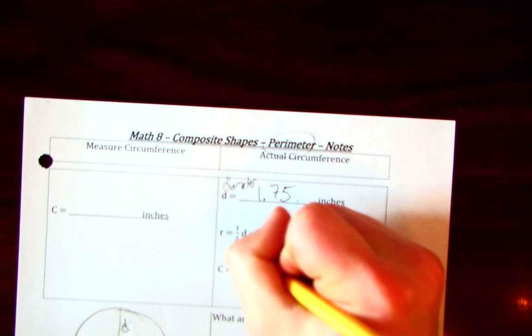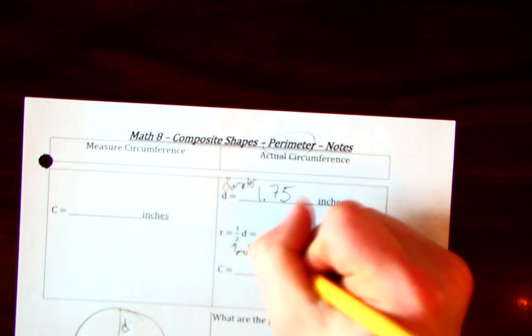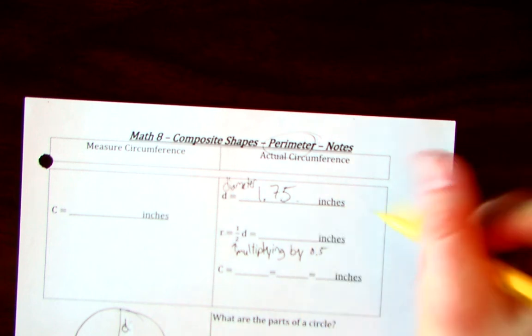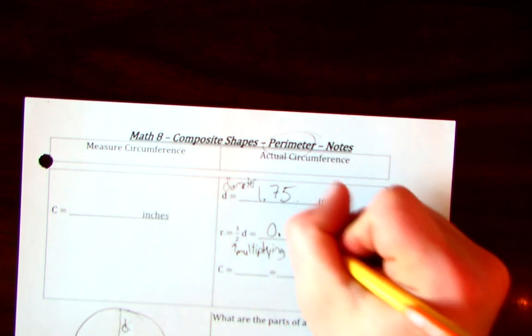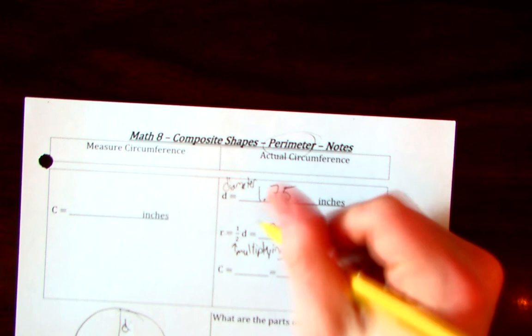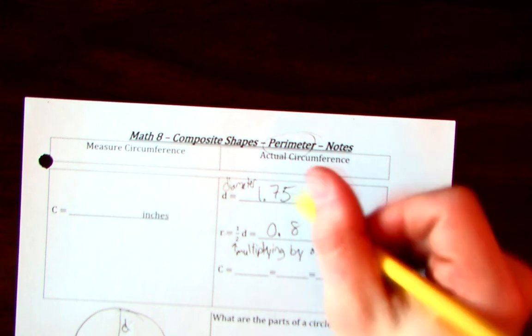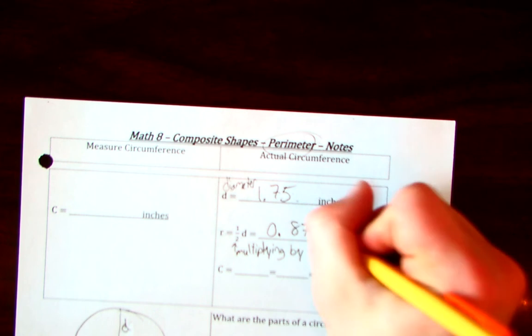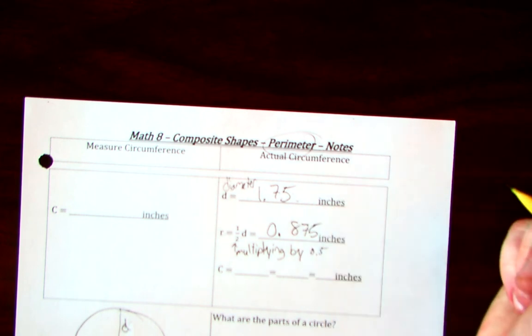This is the same as multiplying by 0.5. And so, half of that would be, half of 1.75 is going to be 0.875. There we go. Now, let's see. What can we have?